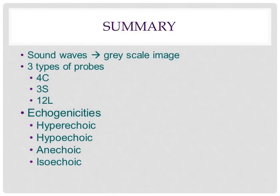In summary, ultrasound technology uses high-frequency sound waves to produce an image on the screen. There are three types of probes which we will be using in lab to perform our ultrasound exams. Each probe has a different shape, frequency, and purpose. Ultrasound imaging is in grayscale, and there are four types of echogenicities or levels of gray: hyperechoic, hypoechoic, isoechoic, and anechoic. Thank you for watching our online ultrasound tutorial.